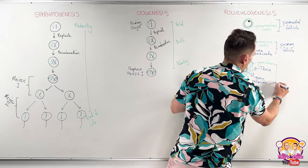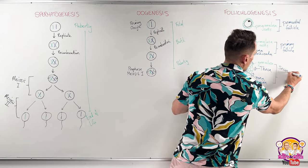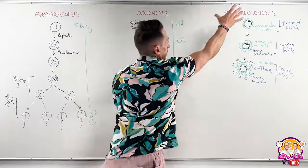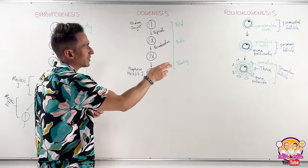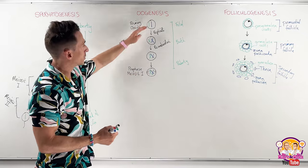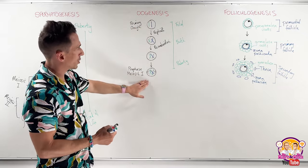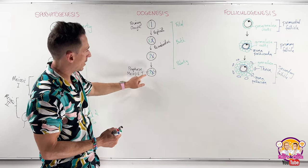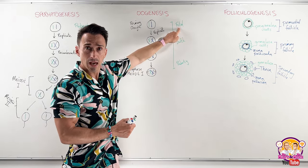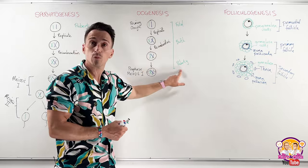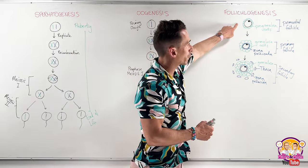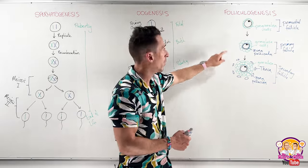Let's compare folliculogenesis with oogenesis. Inside the primordial, primary, and secondary follicle, we've got this primary oocyte. The process to prophase I of meiosis happens during fetal development, and it stays like that all the way through birth and up until puberty. Throughout that time — from fetal development through to puberty — the process of going from primordial follicle to primary follicle to secondary follicle continually occurs.